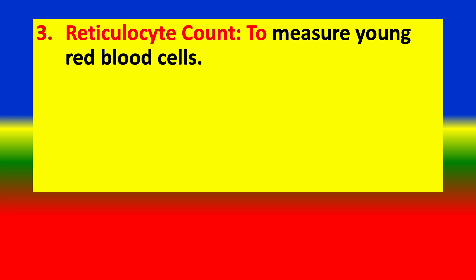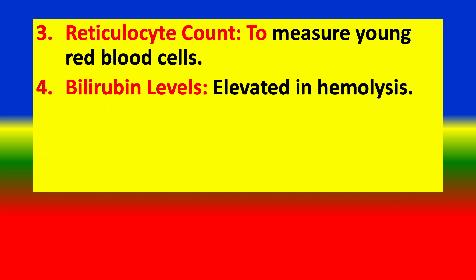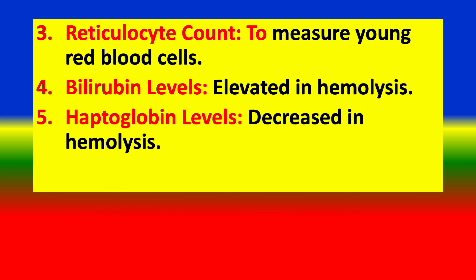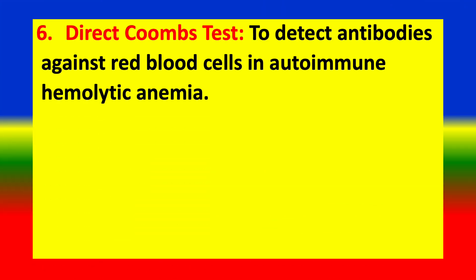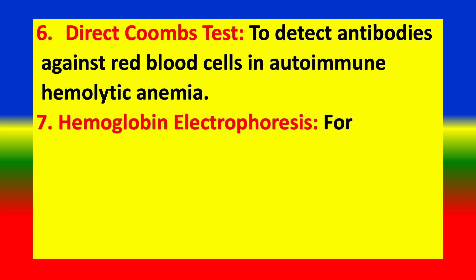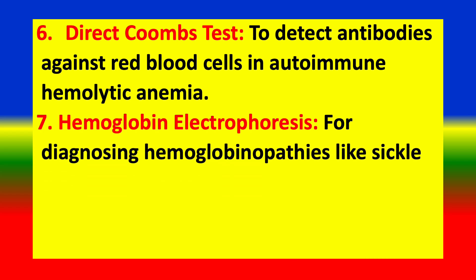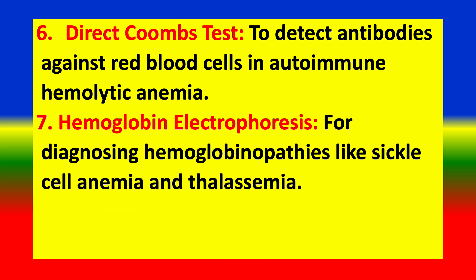(3) Reticulocyte count — to measure young red blood cells. (4) Bilirubin levels — elevated in hemolysis. (5) Haptoglobin levels — decreased in hemolysis. (6) Direct Coombs test — to detect antibodies against red blood cells in autoimmune hemolytic anemia. (7) Hemoglobin electrophoresis — for diagnosis of hemoglobin abnormalities like sickle cell anemia and thalassemia.